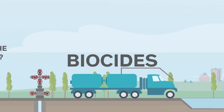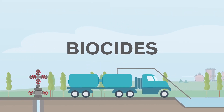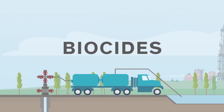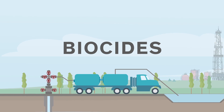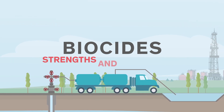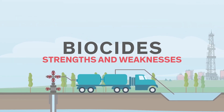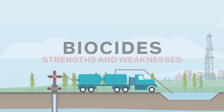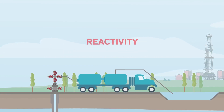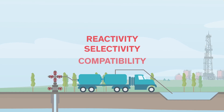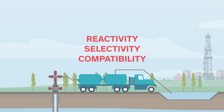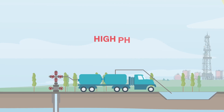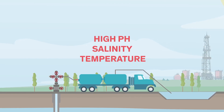There are a number of biocides used in oil and gas operations today. In order to design an effective microbial control program, it is important to understand what their strengths and weaknesses are. Commonly used biocides distinguish themselves from one another in terms of their reactivity, selectivity, and compatibility, and how they perform under different environmental conditions, such as high pH, salinity, and/or temperature.